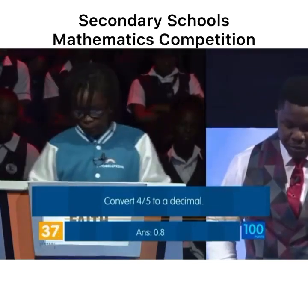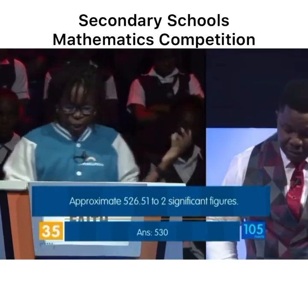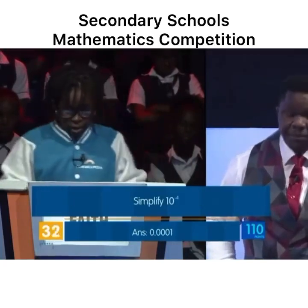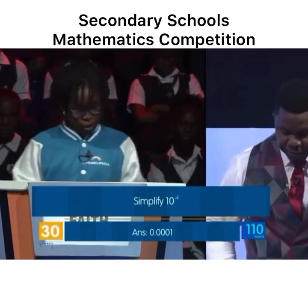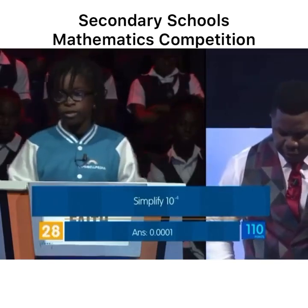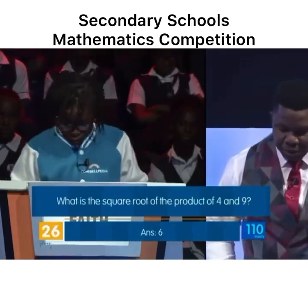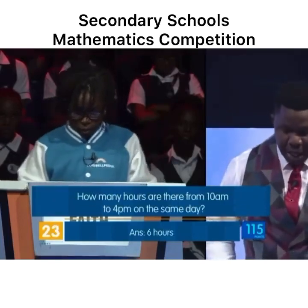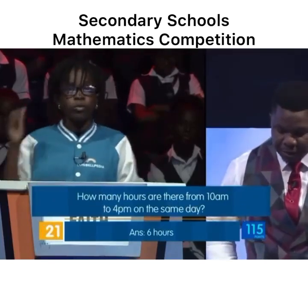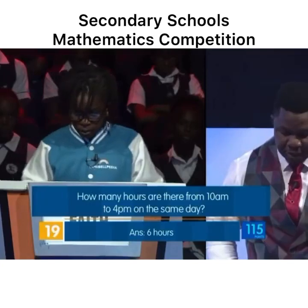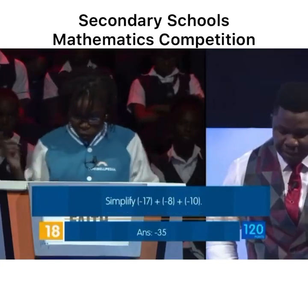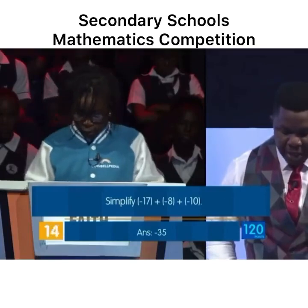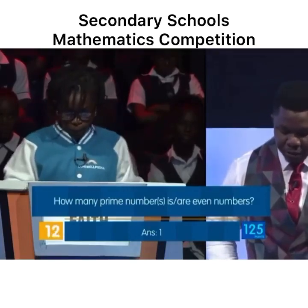Convert 4 over 5... 0.8. Correct. Approximate 5.513 to 1 significant figure... 5.5... 5.513. Correct. Simplify 10 to the power of minus 4. 0.00001. Incorrect. What is the square root of the product of 4 and 9? 6. Correct. How many hours are there from 10 a.m. to 4 p.m. on the same day? 6. Correct. Simplify minus 17 plus minus 8 plus minus 10. Minus 35. Correct. How many prime numbers... 1. Correct.